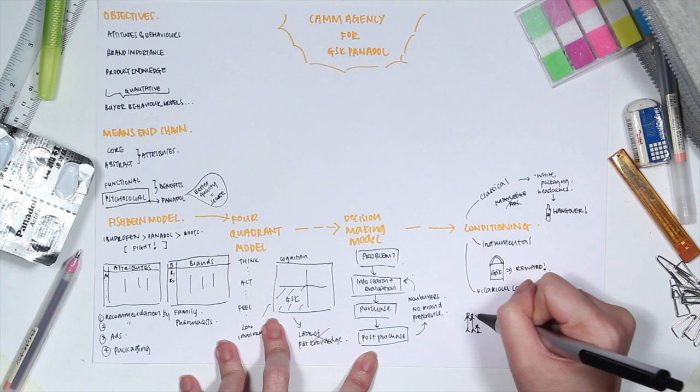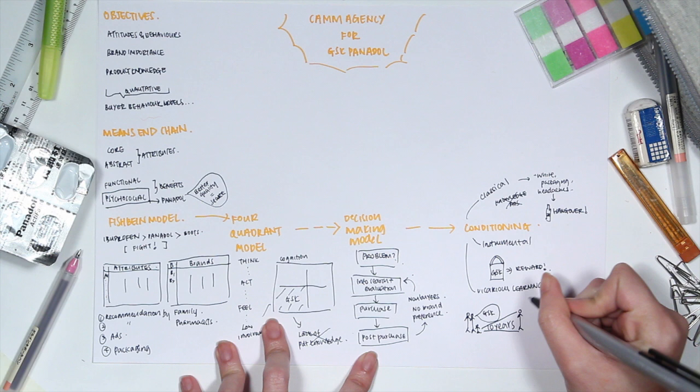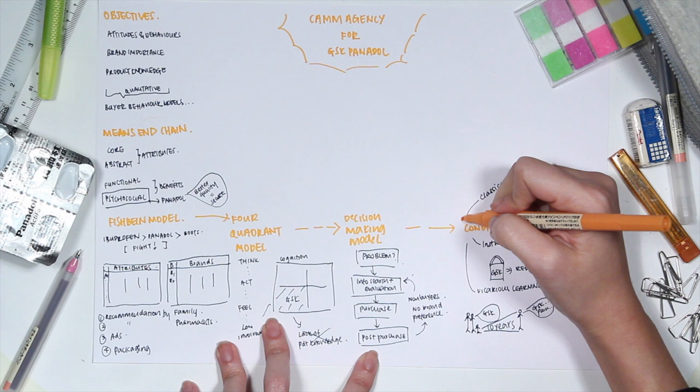Lastly, vicarious learning was mentioned. Panadol seemed to be a drug that parents used to give to their children since childhood. So even in their adulthood, they would follow the same routine when they got sick.